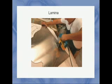A lamina is an object with one dimension very, very small — its thickness is very small. It has a length and a width but you just consider it as a two-dimensional shape. You ignore the thickness.